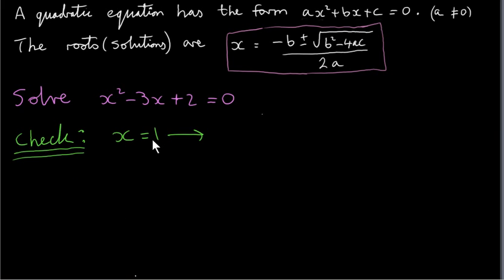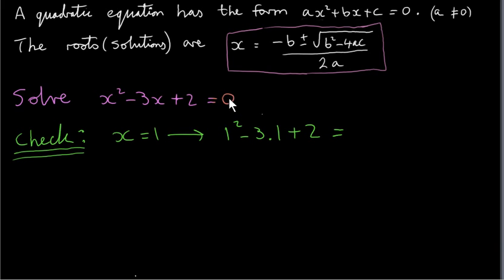Let's check x equals 1. We plug 1 into the equation: 1 squared minus 3 times 1 plus 2 — we just replace x with 1. If we work all of this out, we should get the right-hand side, which is 0. So we have 1 minus 3 plus 2. Well, 1 minus 3 is minus 2, and minus 2 plus 2 is 0. So that does check out.